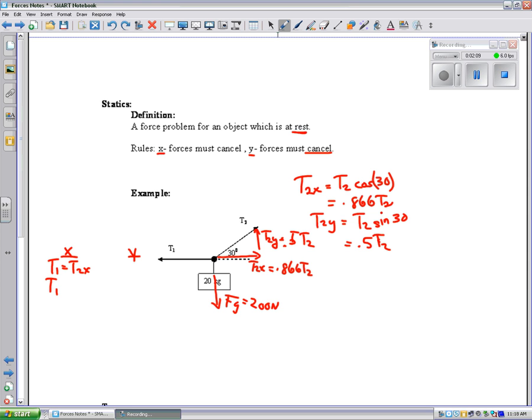T1 equals 0.866 T2. I have two unknowns, so I can't do anything else with that until I work on the y side.